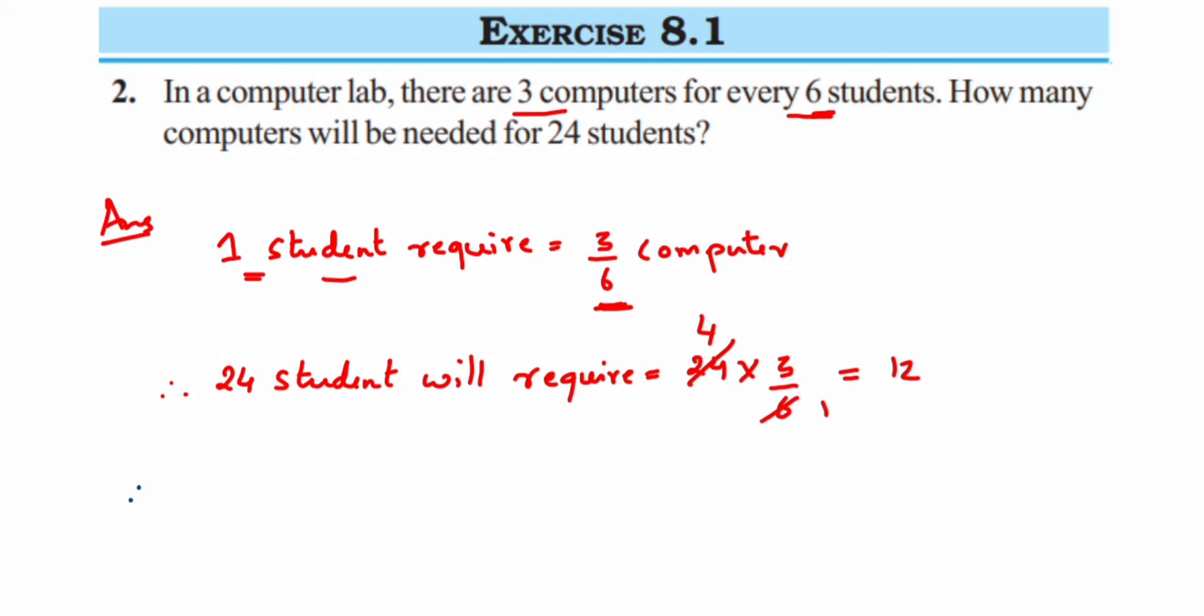From here we can conclude, therefore, the number of computers required will be 12. So that's it. It's very simple. I just followed the unitary method here.